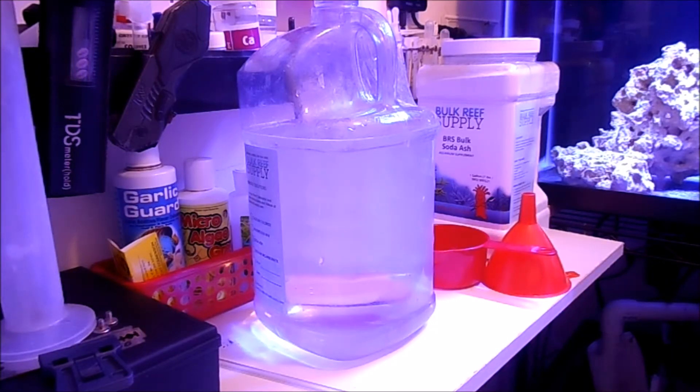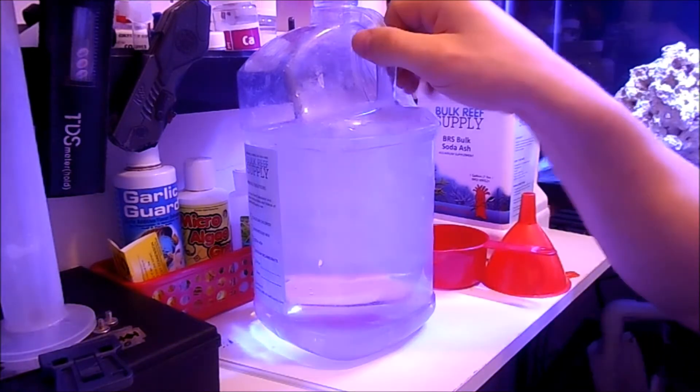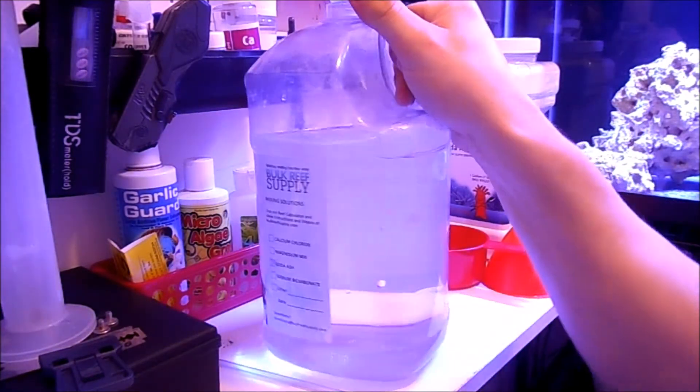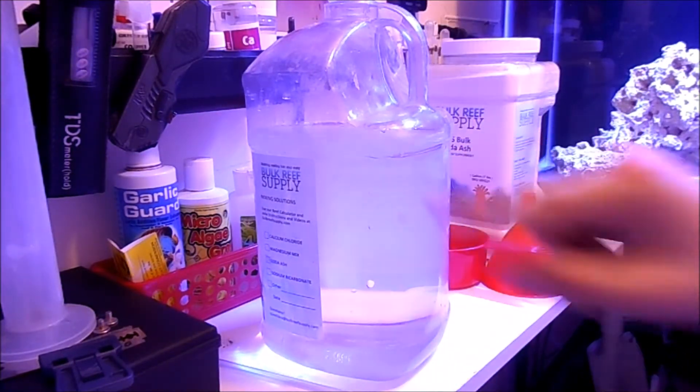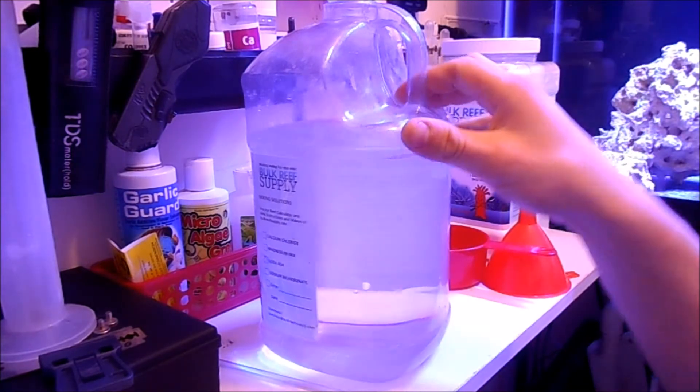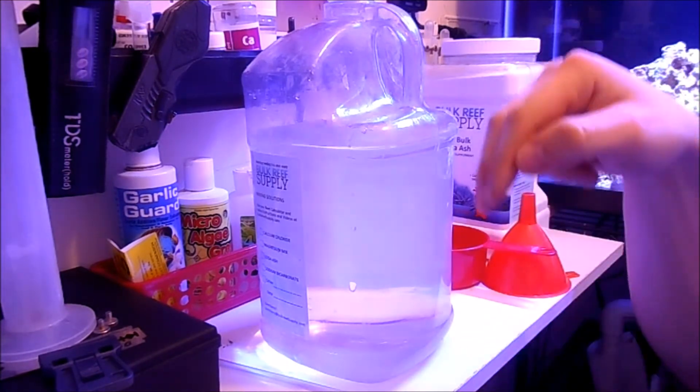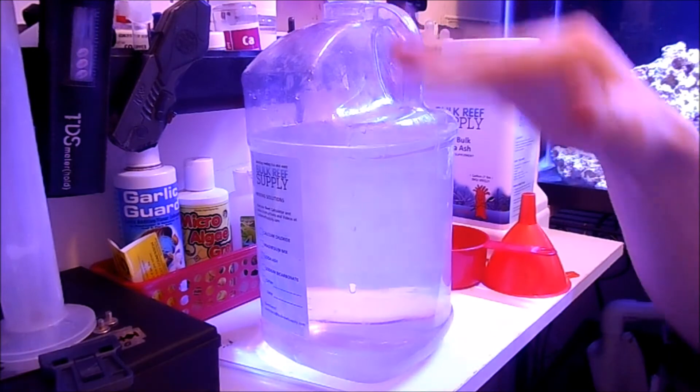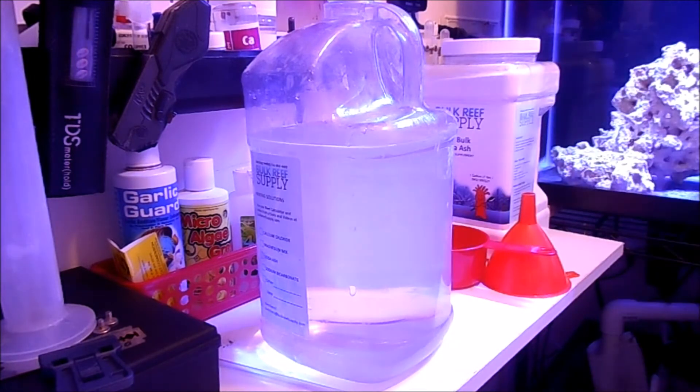All right guys, now we're back. Let's get started making the soda ash. RODI water. I usually fill up the gallon jug about three-fourths of the way. I always end up, I know that people like to mix it as they go, I put it in there, shake it up, fill it up the rest of the way. And then I set it in hot water in the sink for a few minutes and just let it dissolve that way. It's quick, easy, kind of lazy man way of doing it, I suppose.